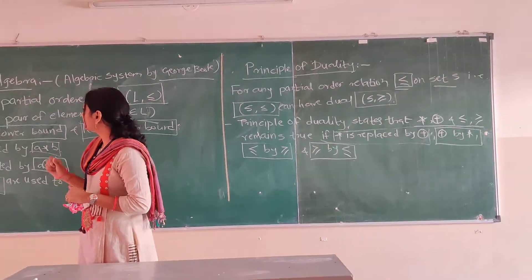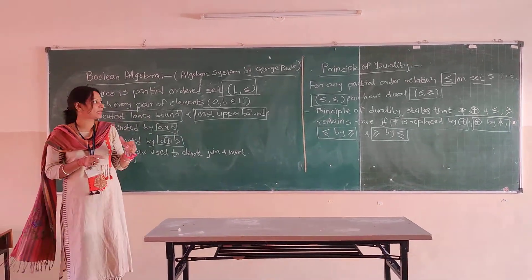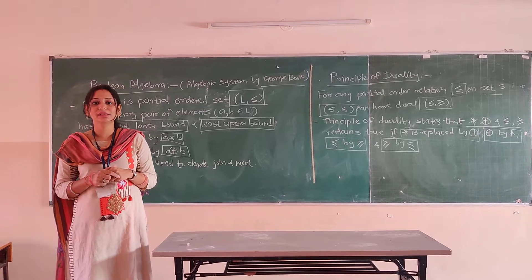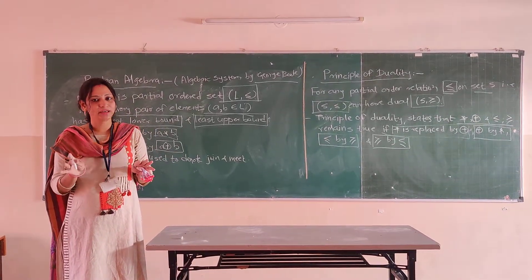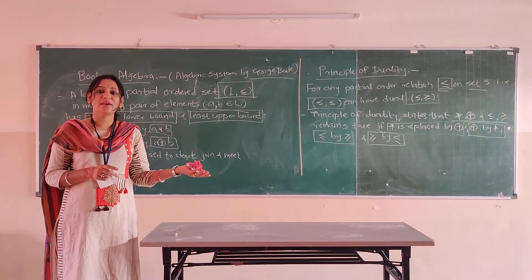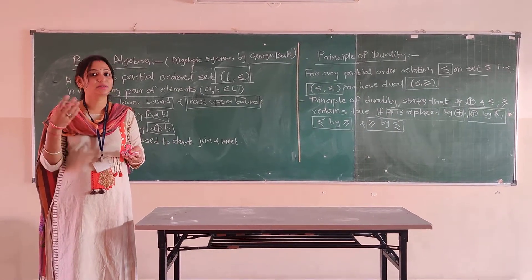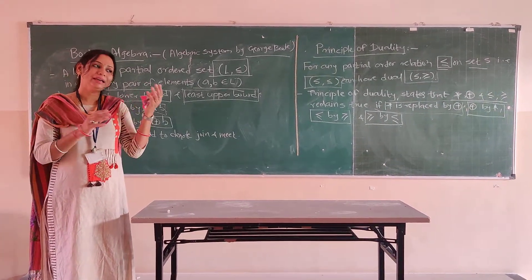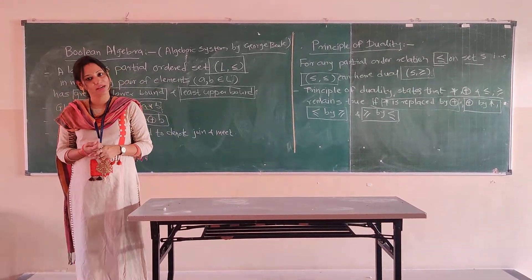This is all about Boolean algebra — the concept of lattice and principle of duality. In the next section we will see the properties of lattice. The properties are already familiar from when we covered groups and propositions: commutative, associative, and others. But we will cover how they are represented in terms of lattice in our next section.